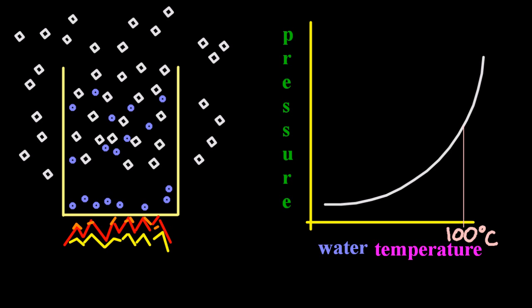And here's the bit they want you to know, is that a liquid will boil when its vapour pressure equals atmospheric pressure. So, the green pressure there is vapour pressure, and at 100 degrees C, one atmosphere vapour pressure and one atmosphere atmospheric pressure, you're going to get boiling.